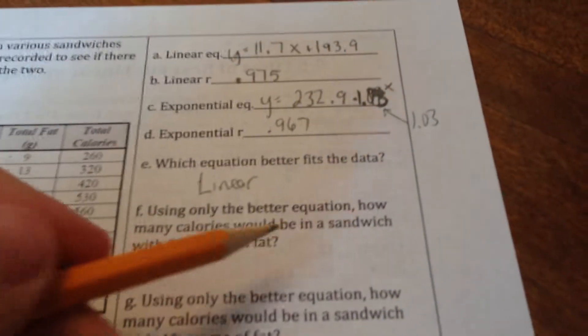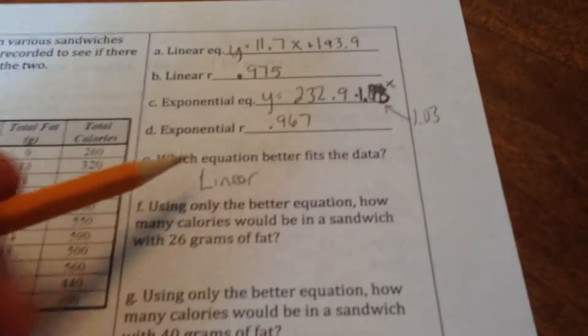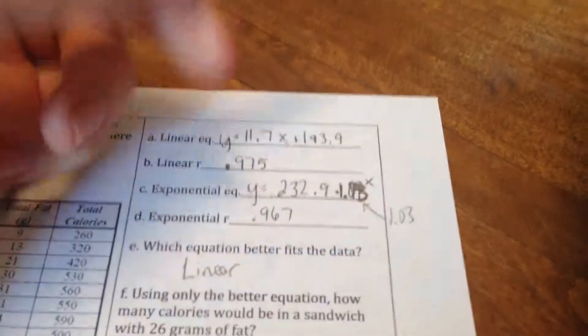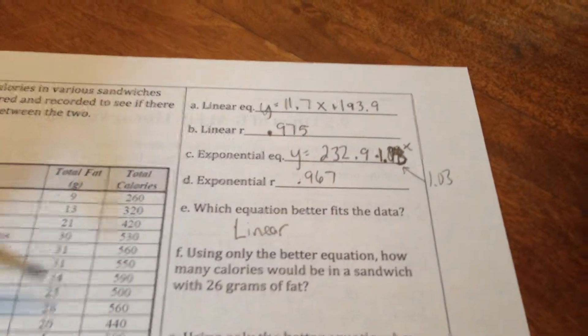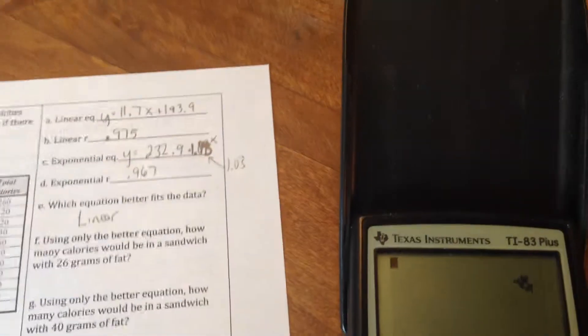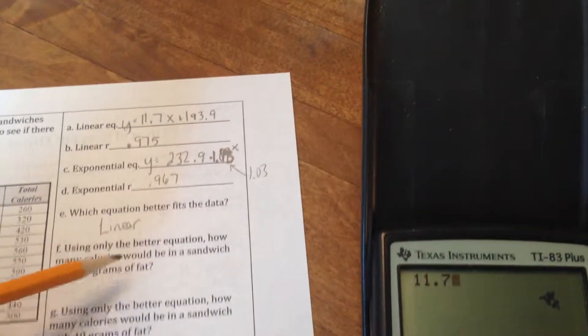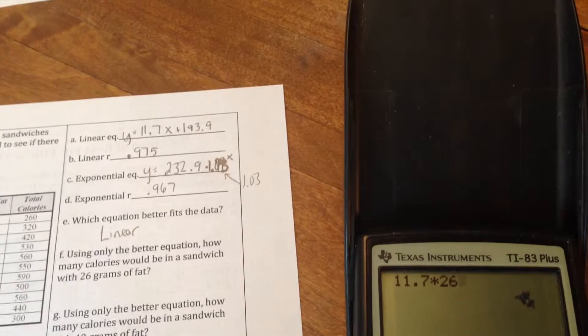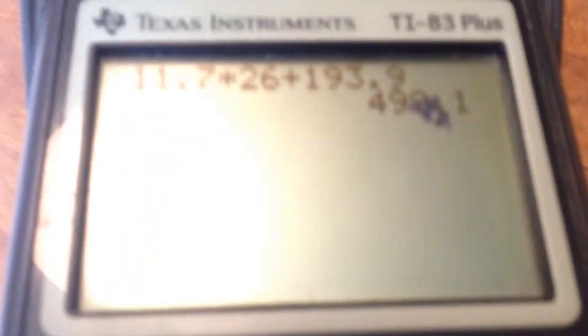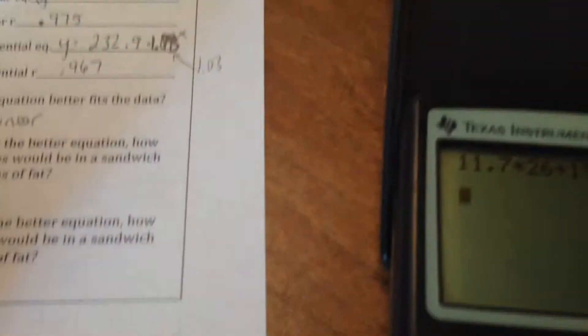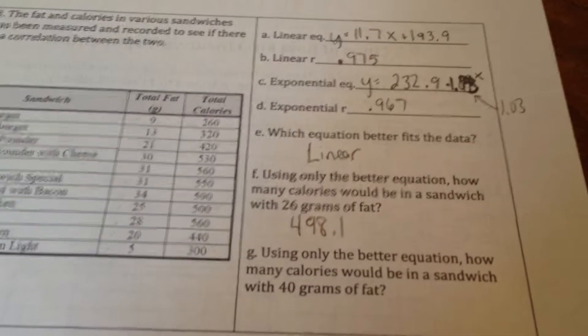Now, using only the better equation, how many calories would be in a sandwich with 26 grams of fat? So we're going to use the linear equation because it was the better one. And where there's an X, I'm going to plug in 26. Because remember, our X numbers represent total grams of fat. So let's go back to the home screen. Clear that out. I'm just going to put in 11.7, and then I'm going to replace the X with 26. So times 26 plus 193.9. Let's push enter and see what happens. It's a little hard to see because my calculator is messed up. But that is 498.1. So 498.1. That's where we're estimating how many calories would be in a sandwich that had 26 grams of fat.